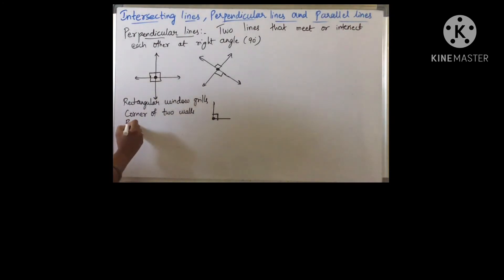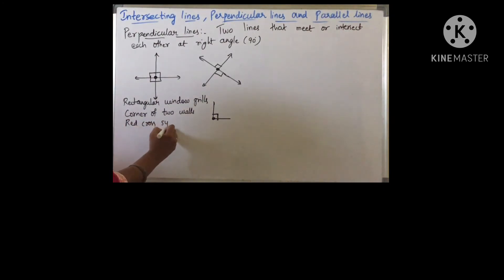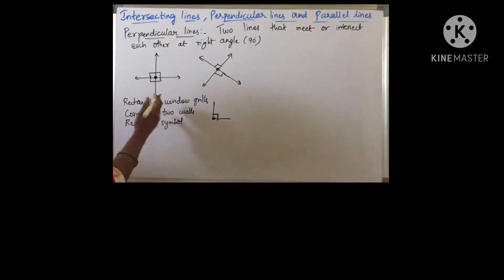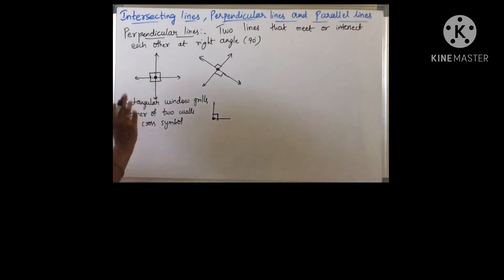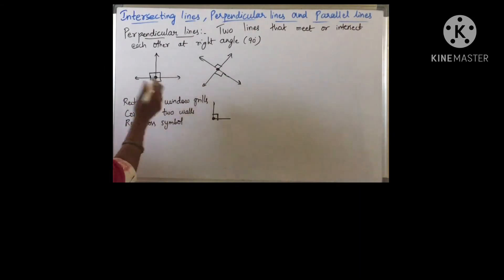Another example is the red cross symbol. So these are examples in real life where we find perpendicular lines. Perpendicular lines meet at 90 degrees, and these lines always intersect at a 90-degree right angle.